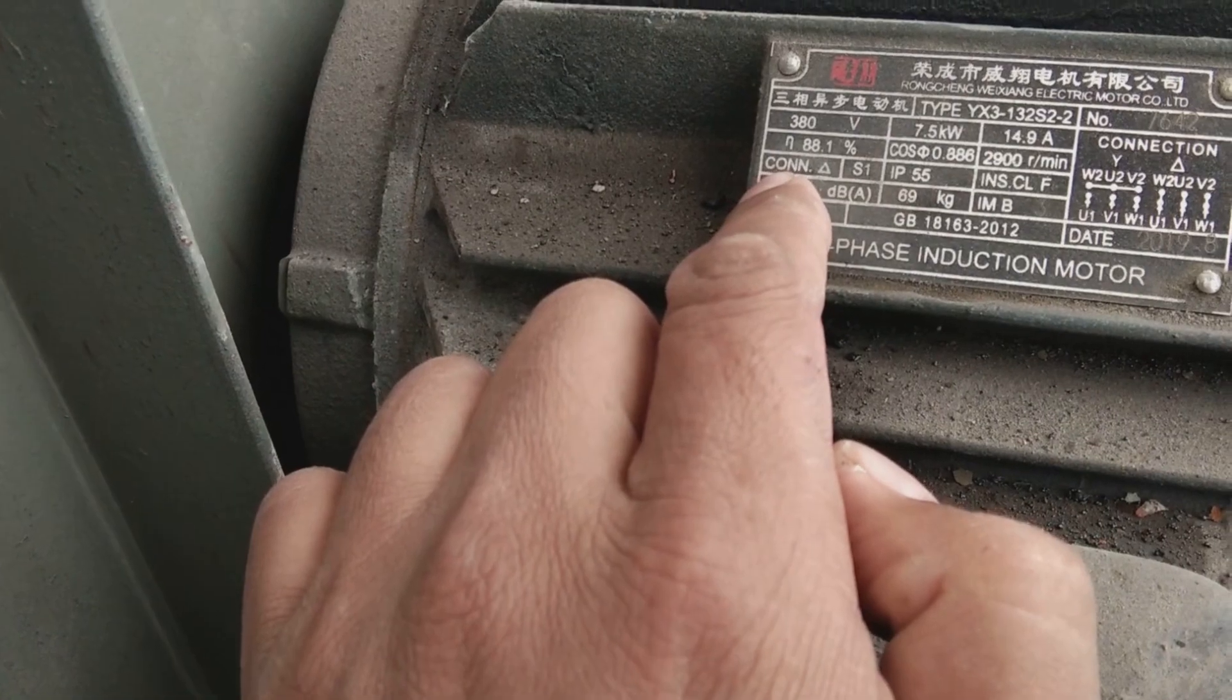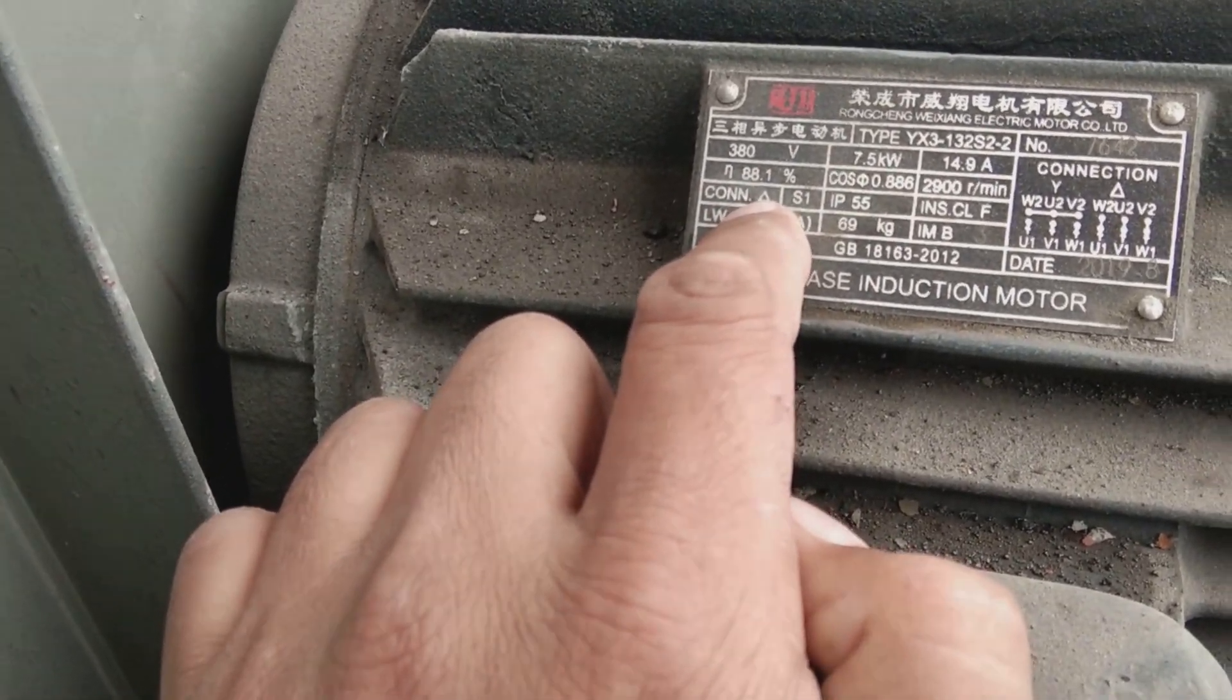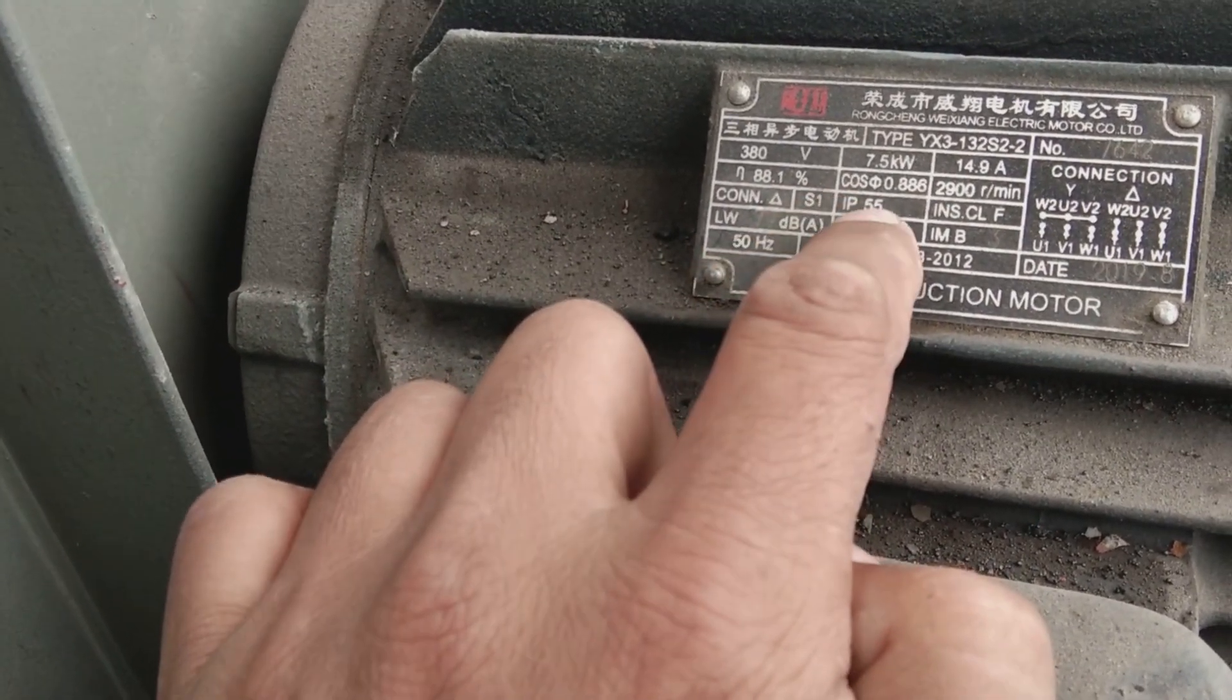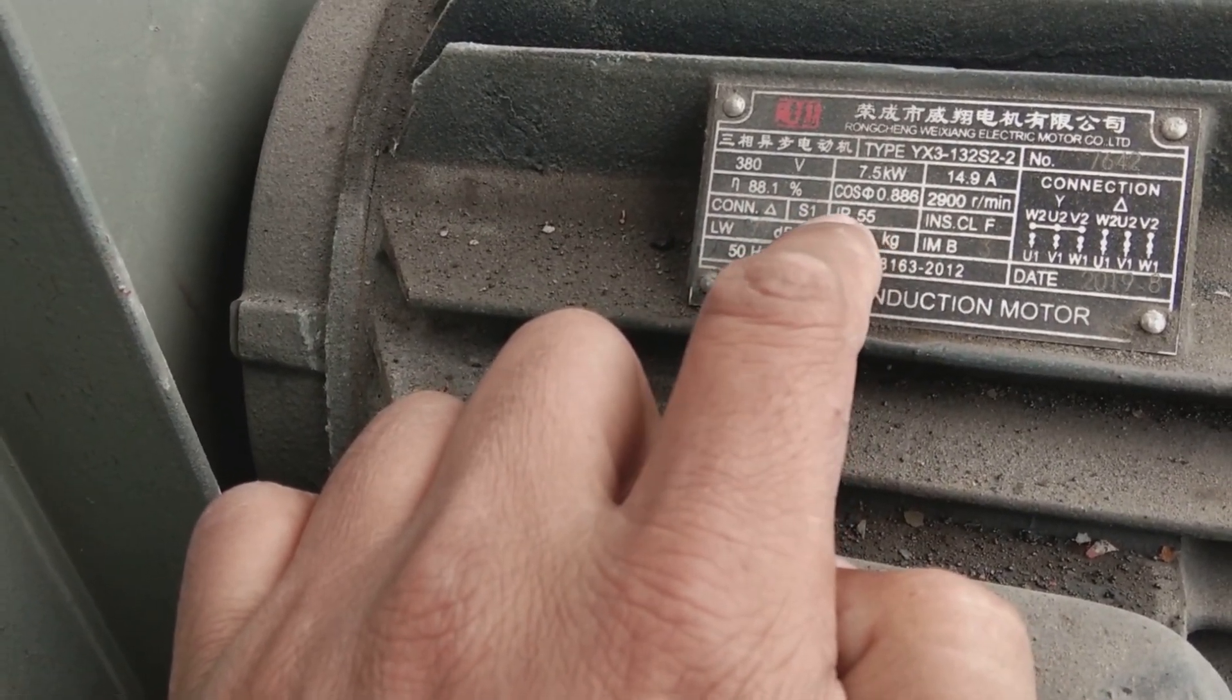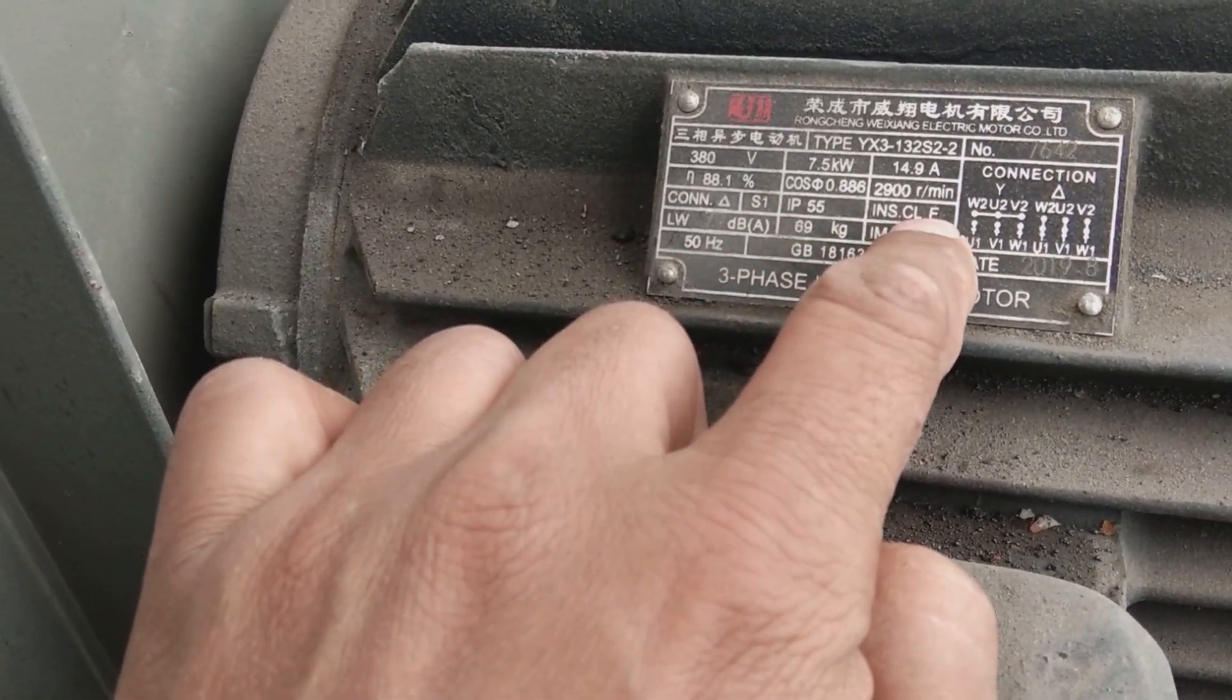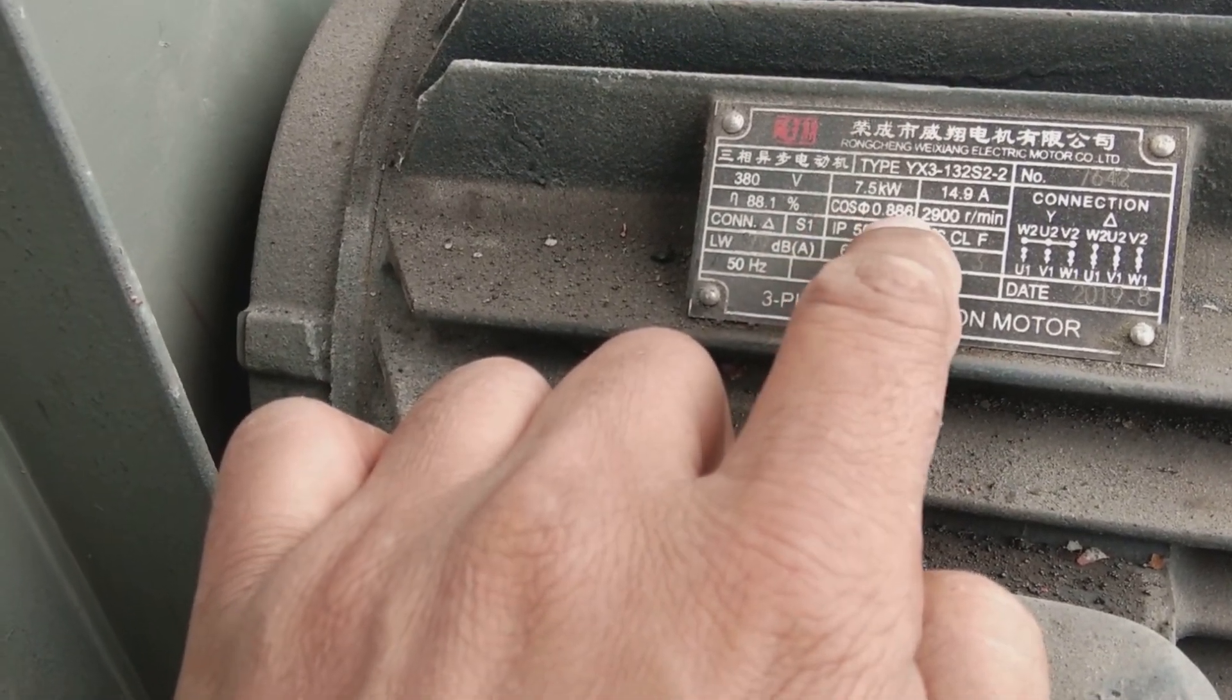This is delta connected as written here. This is S1 duty cycle motor with ingress protection IP55. Insulation class is F, and 2900 is the RPM. The power factor, cos phi, is 0.86, which is a better power factor for this motor.